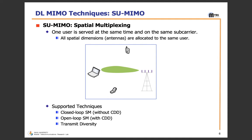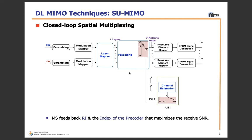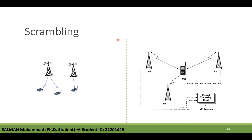In SU-MIMO downlink, one user is served at a time and all spatial dimensions or antennas are allocated to a single user. Supported techniques include closed-loop (where UE provides PMI to the network), open-loop (where base station has no feedback from user), and transmit diversity. This figure is very important — I'll explain all the blocks. Once you understand closed-loop spatial multiplexing you can automatically understand open-loop too, including with codebook precoding and non-codebook precoding.